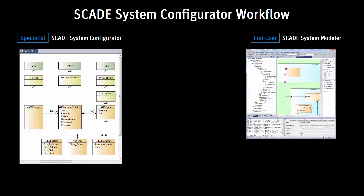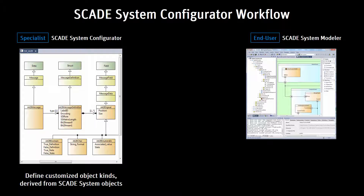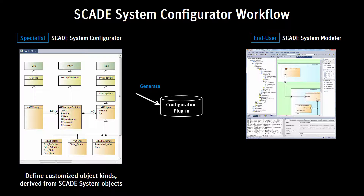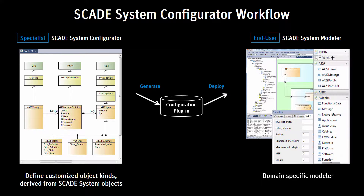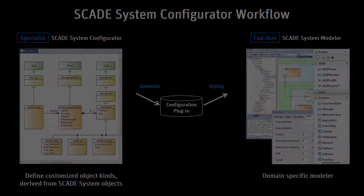The flow is easy. You create a new SCADE System Configurator project and customize the SCADE System concepts from your meta-model level. You generate and test a configuration in the Preview model and build a configuration. This allows you to test the configuration before deploying it into SCADE System. Once you're satisfied with it, you can deploy the configuration. You can then load and use a configuration in a SCADE System model. Thank you.